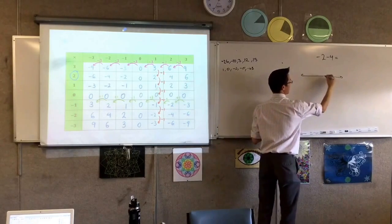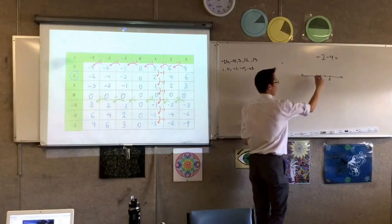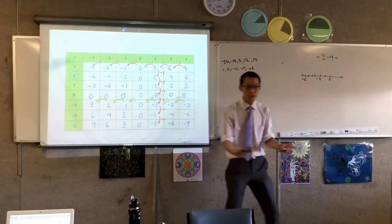I'm going to start at the zero. I'm going to start at negative two. And I'm going to move. I'm going to go one, two, three, four. And that's where I end up. Does that make sense?